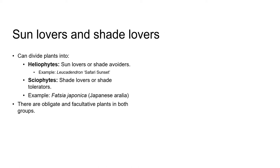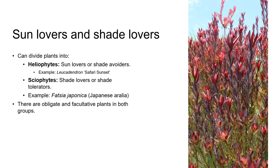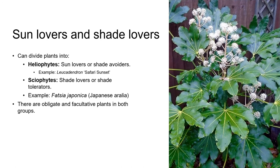A good example of a plant that is a heliophyte is Leucodendron Safari Sunset. Plants that thrive in shade are called shade lovers or schiophytes, which is derived from the Greek word schio meaning shade. A good example of a schiophyte or shade lover is Fatsia japonica, the Japanese aralia.